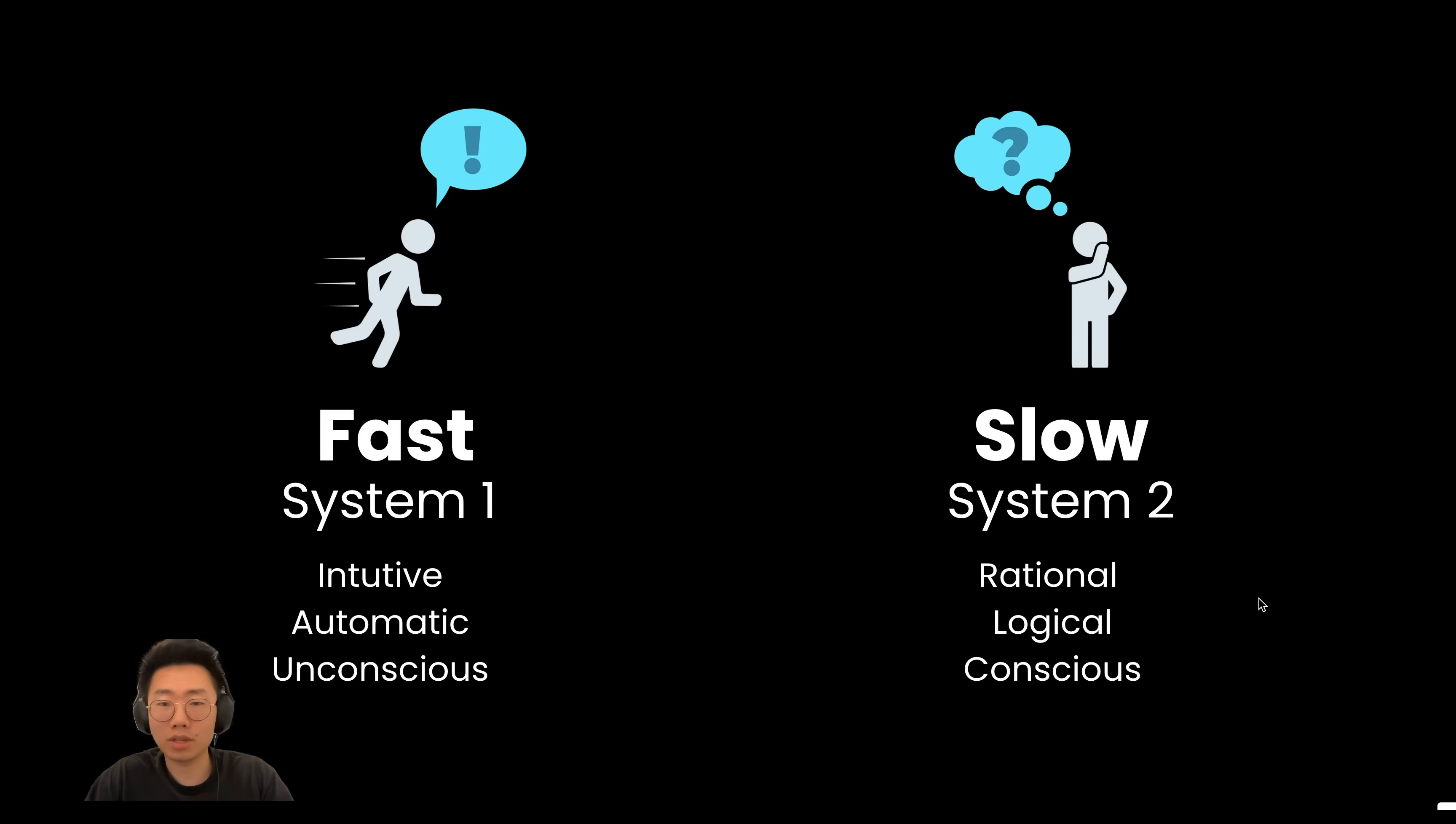The other mode of brain where it is slower but much more rational, gives more accurate answers. Both system one and system two play critical roles in your life and decision making. But problems often occur when you try to solve a complex system two problem with system one thinking, which is exactly what we observed in the video clips before.